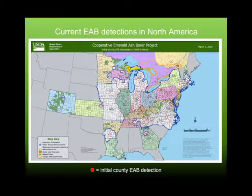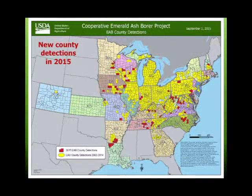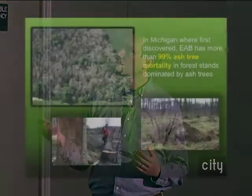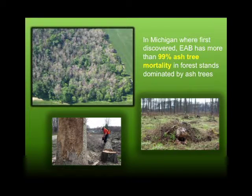Here's the current map — every county with a red dot has been confirmed with emerald ash borer, spreading as far west as Boulder, Colorado and down to Louisiana and Georgia. In 2015, all the red counties had detections. In heavily infested woodland areas, emerald ash borer is killing 99% of ash trees — it's not a hit-and-miss situation. It pretty much hits every single tree.